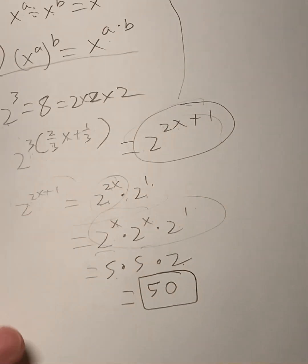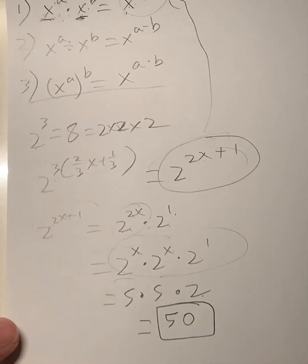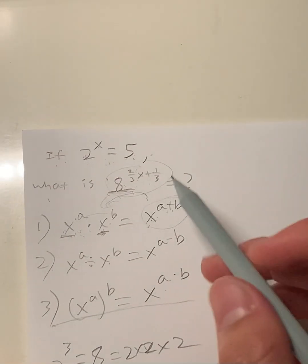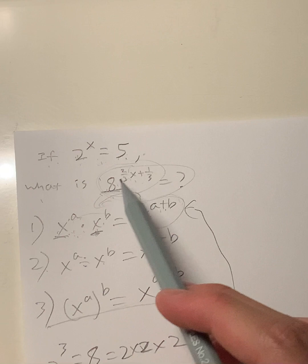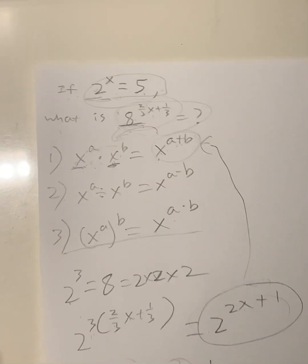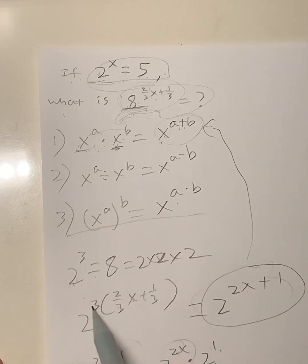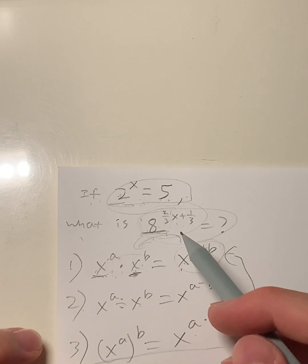That right there is going to be your answer. So let's look back at our steps and break it down again, in case you didn't understand. Basically what we did was we rewrote our answer, 8^(2x/3 + 1/3), in terms of base 2, because that's what our question gives us. When you break that down, 2^3 gives you 8, so (2^3)^(2x/3 + 1/3) is what the question is asking for.